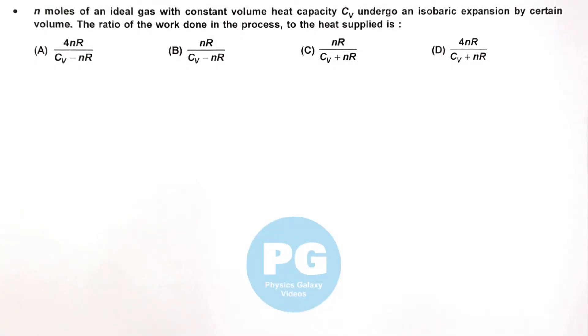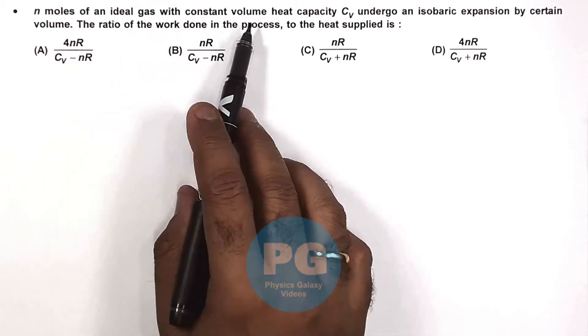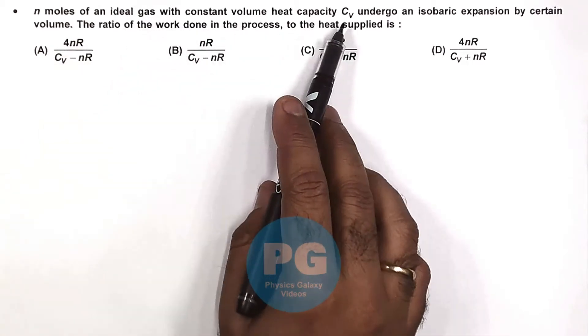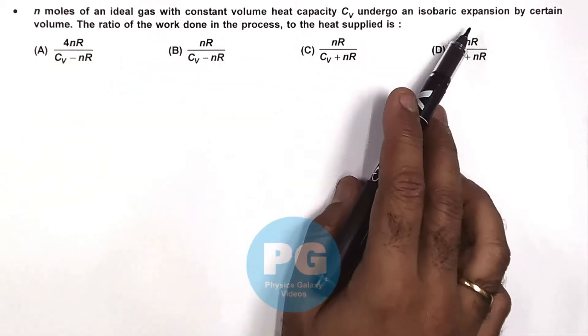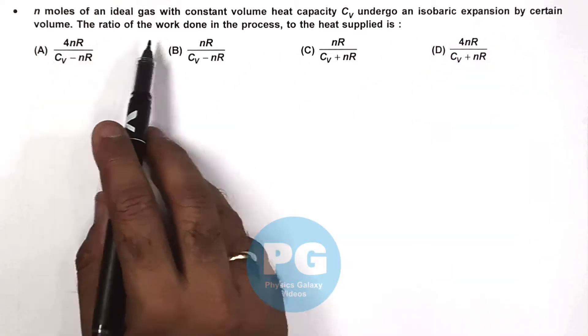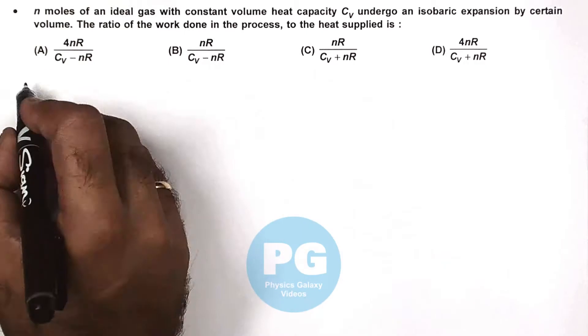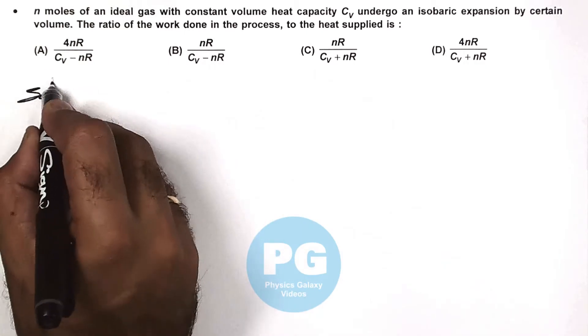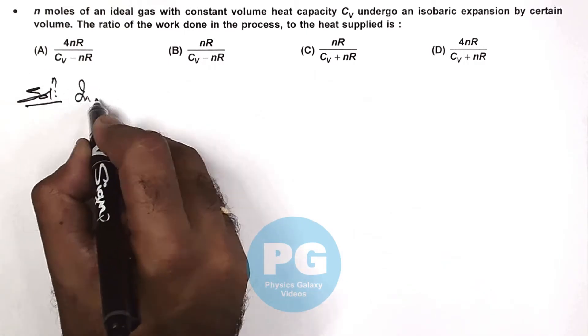In this question, n moles of an ideal gas with constant volume heat capacity Cv undergo an isobaric expansion by certain volume. The ratio of work done in the process to the heat supplied is asked. In an isobaric process,